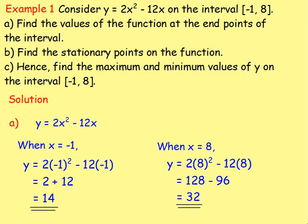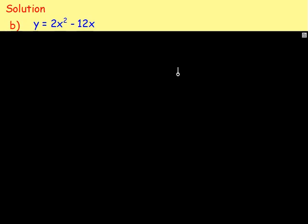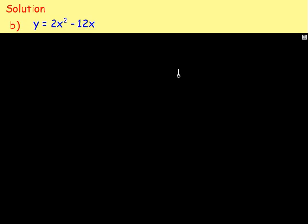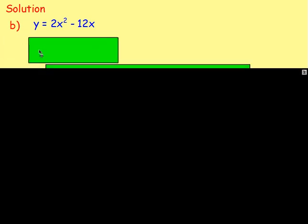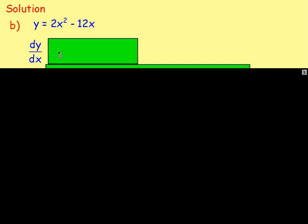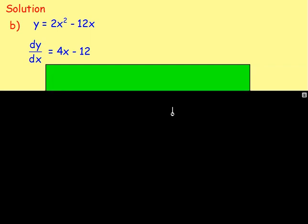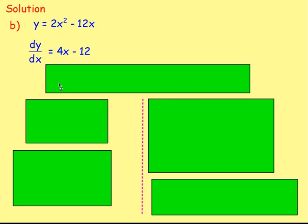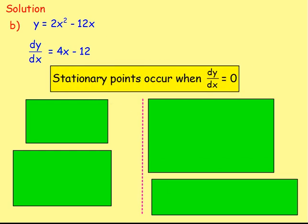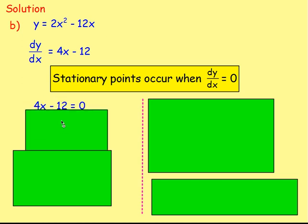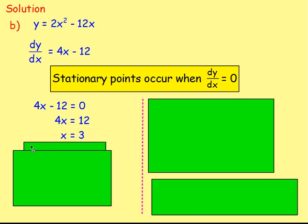For part b, find the stationary points. Starting with y equals 2x squared minus 12x, you differentiate: dy/dx equals 4x minus 12. Stationary points occur when dy/dx equals 0. Setting 4x minus 12 equal to 0, add 12 to both sides and divide by 4, so x equals 3.